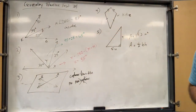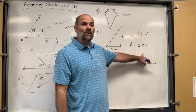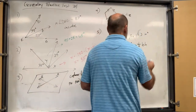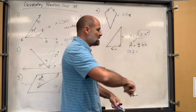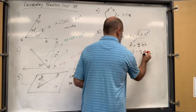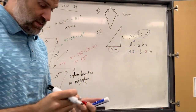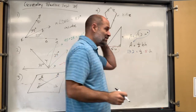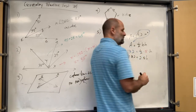Whenever you're working backwards from area, always write the formula first and plug in what you know. We know the area is 13.2 and the base is 5. So 13.2 equals one-half times 5 times height, which gives us 2.5h equals 13.2. Divide both sides by 2.5.